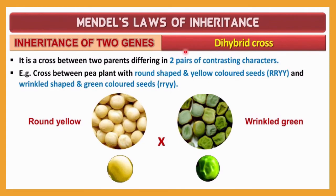In the monohybrid cross experiment, we observed the inheritance of one gene, but here two gene inheritances will be observed during the whole experiment — that is why it is called a dihybrid cross experiment. It is carried out by Mendel, and it is a cross between two parents having differences in two pairs of contrasting characters.